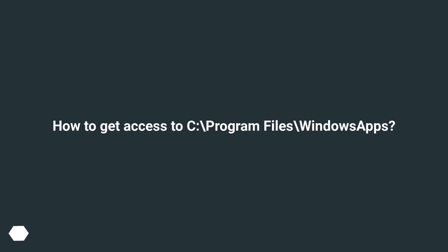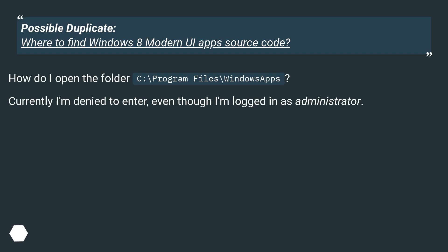How to get access to C: online — possible duplicate: where to find Windows 8 Modern UI app source code. How do I open the folder C: online? Currently I'm denied to enter, even though I'm logged in as administrator.